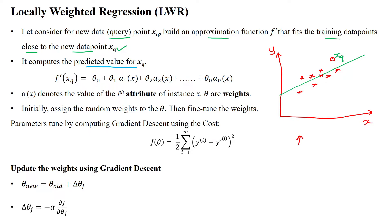We use a linear function: f(xq) = theta_0 + theta_1 * x1 + theta_2 * x2 + ... + theta_n * xn. Here, a_i of x denotes the i-th feature or i-th attribute of a given sample x, and theta is the weight of the corresponding feature.